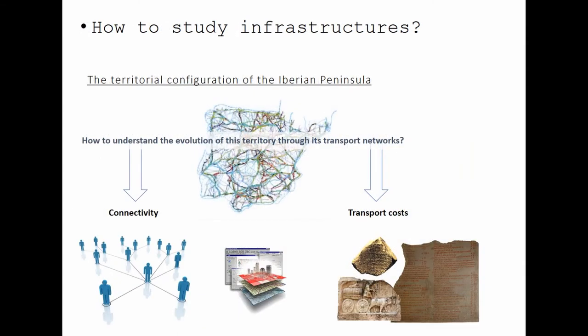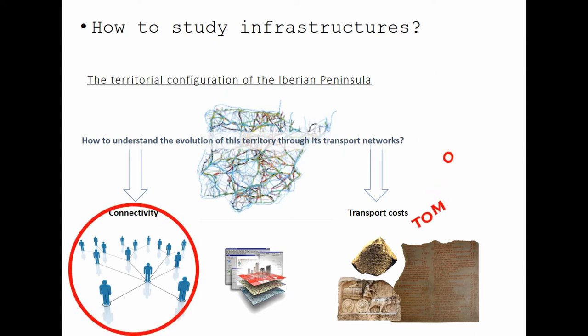How can we use all of this data and these networks to analyze territorial organization in this area? We can do that in different ways. Today we're going to talk about connectivity — and if you're interested in transport cost, tomorrow I will explain more about that. The idea of connectivity is that we understand cities and roads as nodes and connections, and we can analyze the connectivity of these kinds of networks.